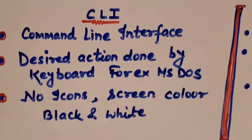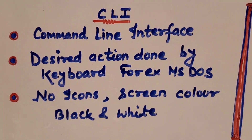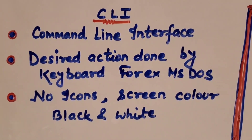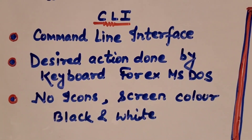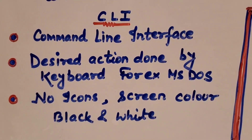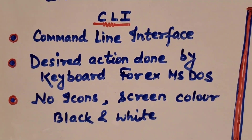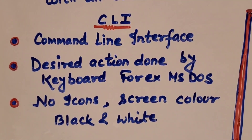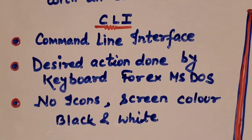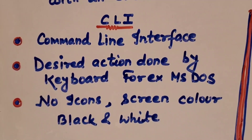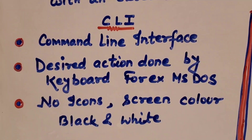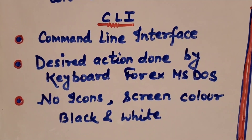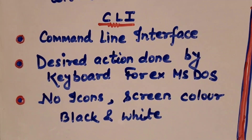CLI's full form is Command Line Interface. Command Line Interface has no option of a mouse. So for any desired action on the computer, you will only have one thing — the keyboard. A very common example of this interface is MS-DOS, which is still working and we can get it freely from the Windows screen — we don't need to buy or install it. MS-DOS is a CLI interface system and it has no icons, no screen colors — it is completely black and white, like a strict person. That is the example I use for MS-DOS.